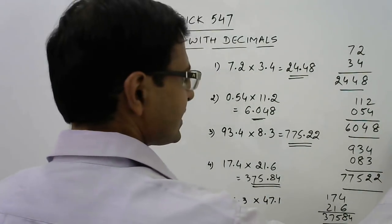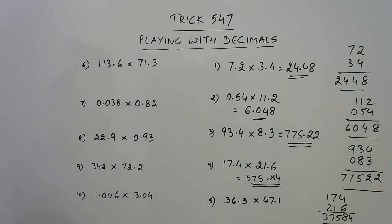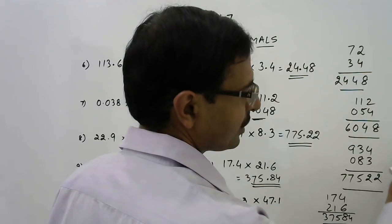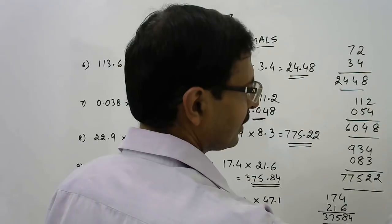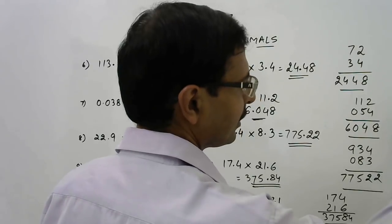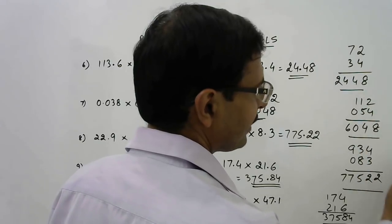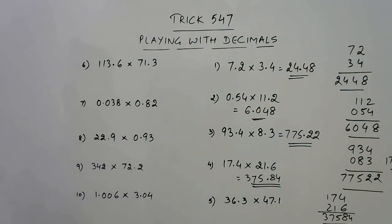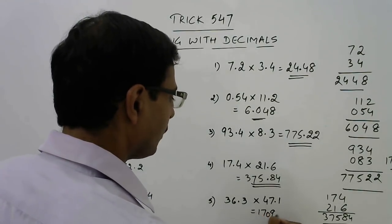Likewise, 363 and 471. Working through the calculation, the product is 170973. Put the decimal, so the answer is 1709.73.